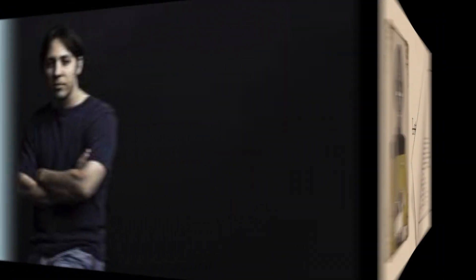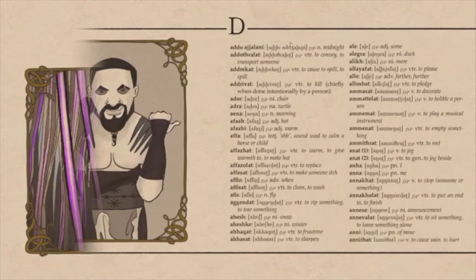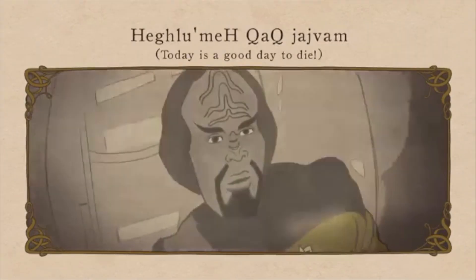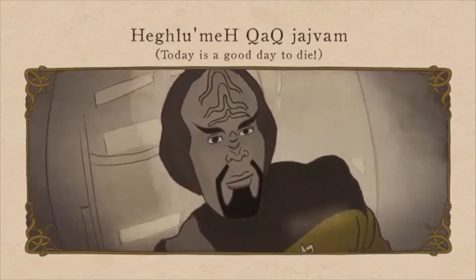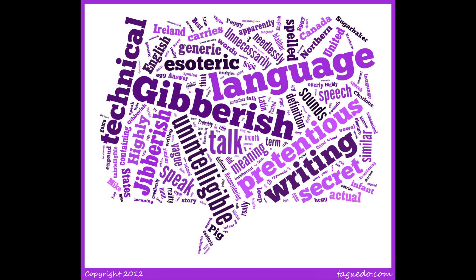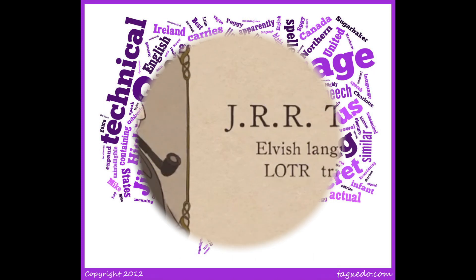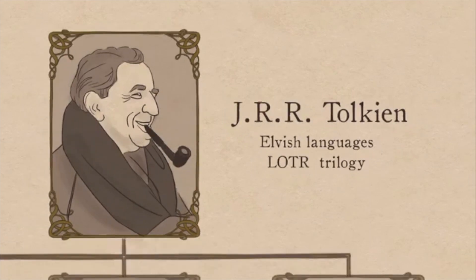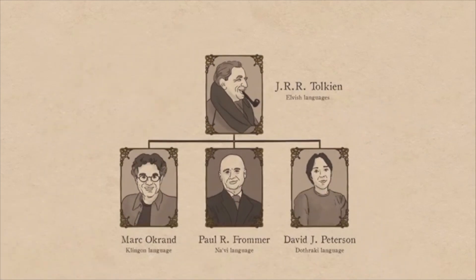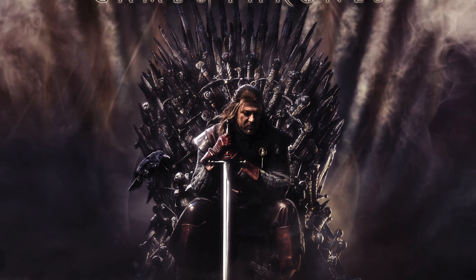D.B. Weiss and David Benioff enlisted the help of David J. Peterson to create the Dothraki language. This is not an uncommon practice for writers creating these types of fantasies. In some instances, you will see the writers simply use nonsensical strings of words. In Weiss and Benioff's case, however, they enlisted outside help to create organized languages to use in Game of Thrones.